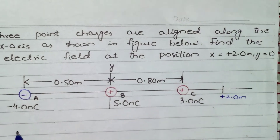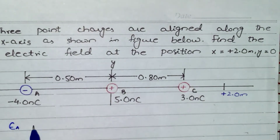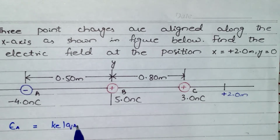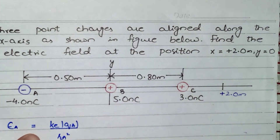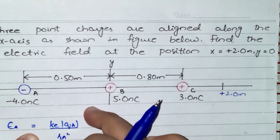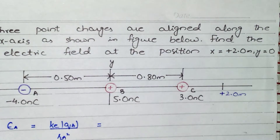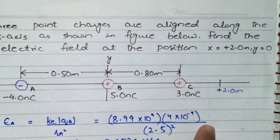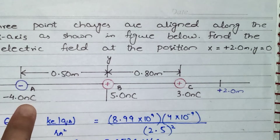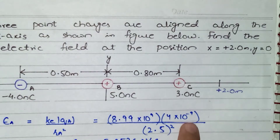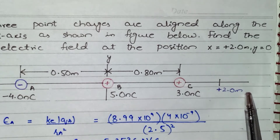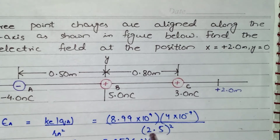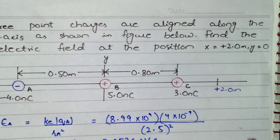For charge A, Ea equals ke times qa over ra squared. We have all the values — just substitute them in standard units. The charge was given in nano coulombs, so convert it by multiplying by 10 to the minus 9. The origin is here, and the point is 2 meters away, so the distance is 2 plus 0.5, which equals 2.5 meters.